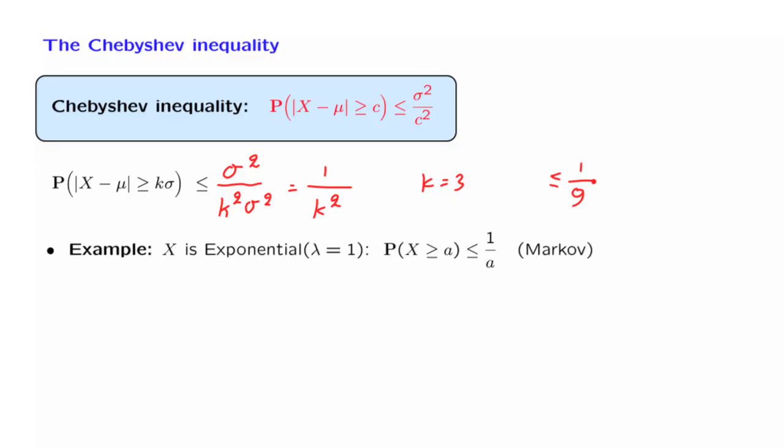Let us now revisit our earlier example, where x is an exponential random variable, and we're interested in the probability that the random variable takes a value larger than or equal to a. The Markov inequality gave us a bound of 1 over a. And as we recall, the exact answer to this probability was e to the minus a.